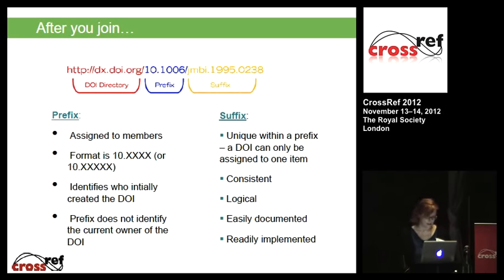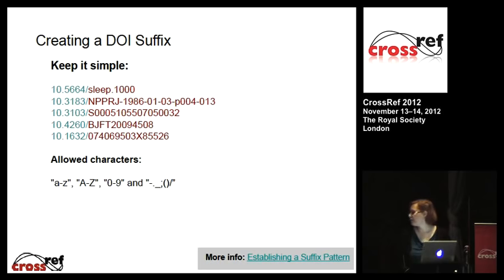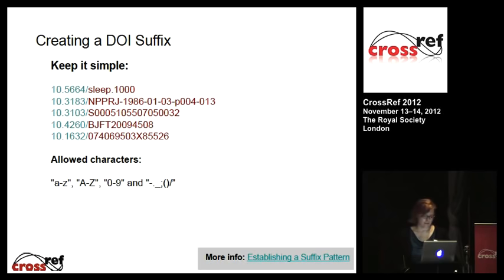Regarding the suffix, the most important thing to remember is that they need to be unique, and the most important thing is to keep it simple. We do limit the characters allowed in a DOI suffix — basically alphanumeric and a few punctuation characters. We used to allow more characters, and the actual DOI standard allows all kinds of stuff, but we've noticed that special characters and angled brackets cause a lot of problems with links. So we've blocked them, and it's made everyone's life a lot easier.